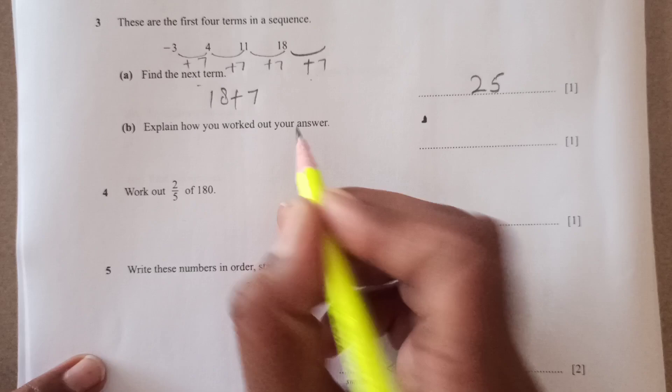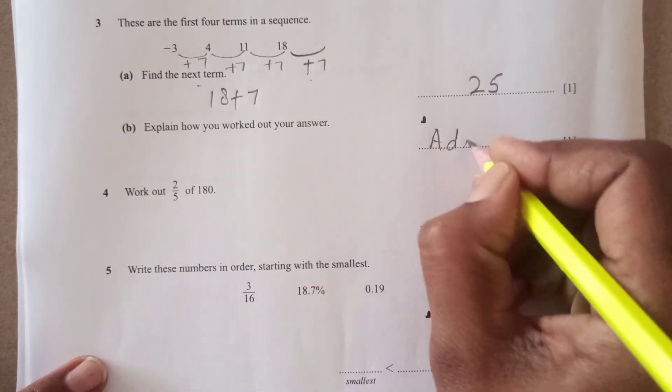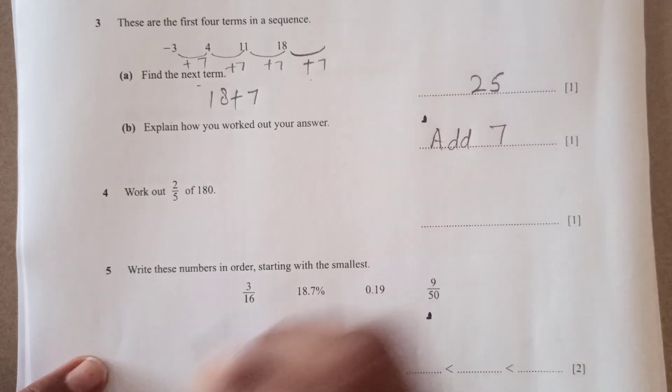25 is going to be the final answer. Now explain how you worked out your answer. Simple. We just calculated this by adding, add 7, right.